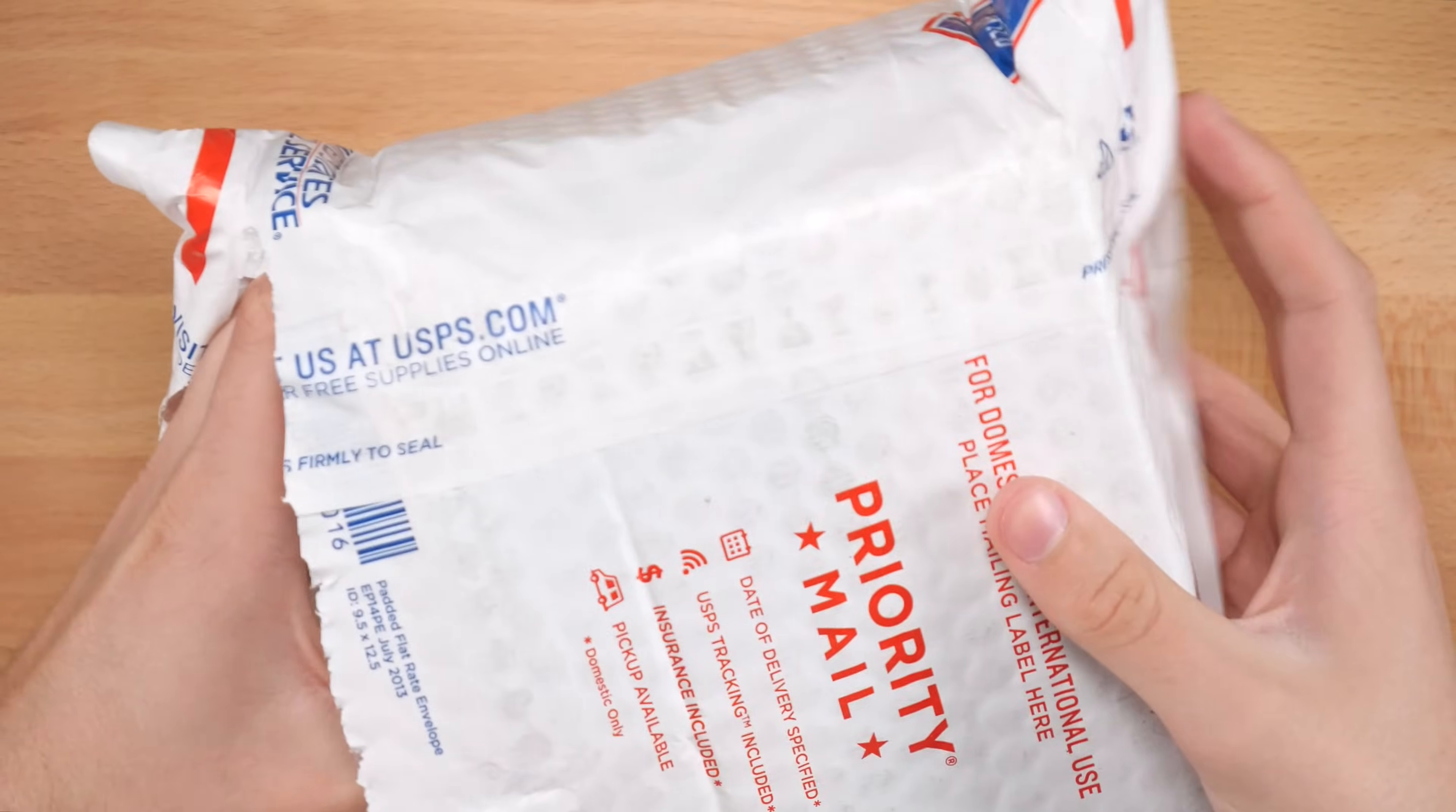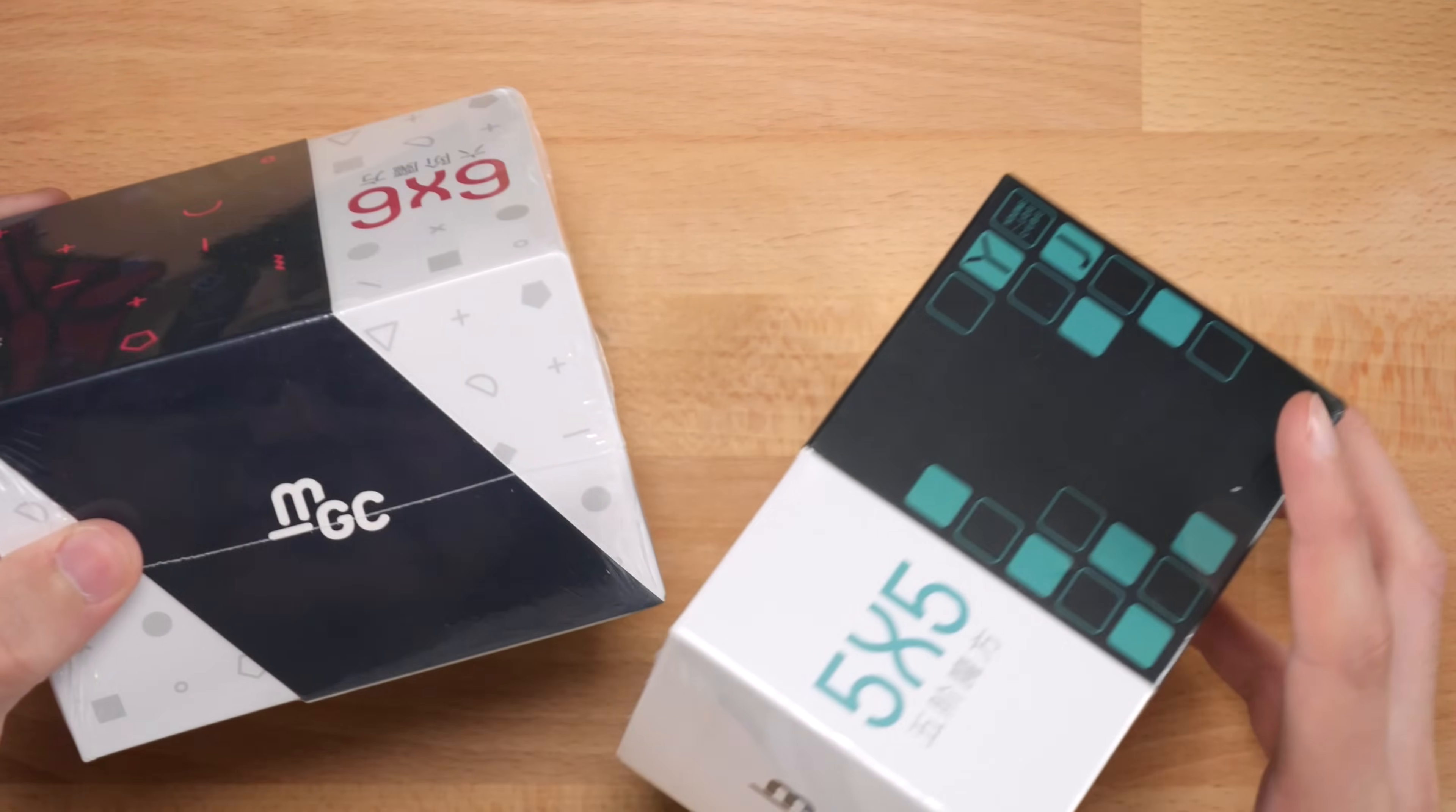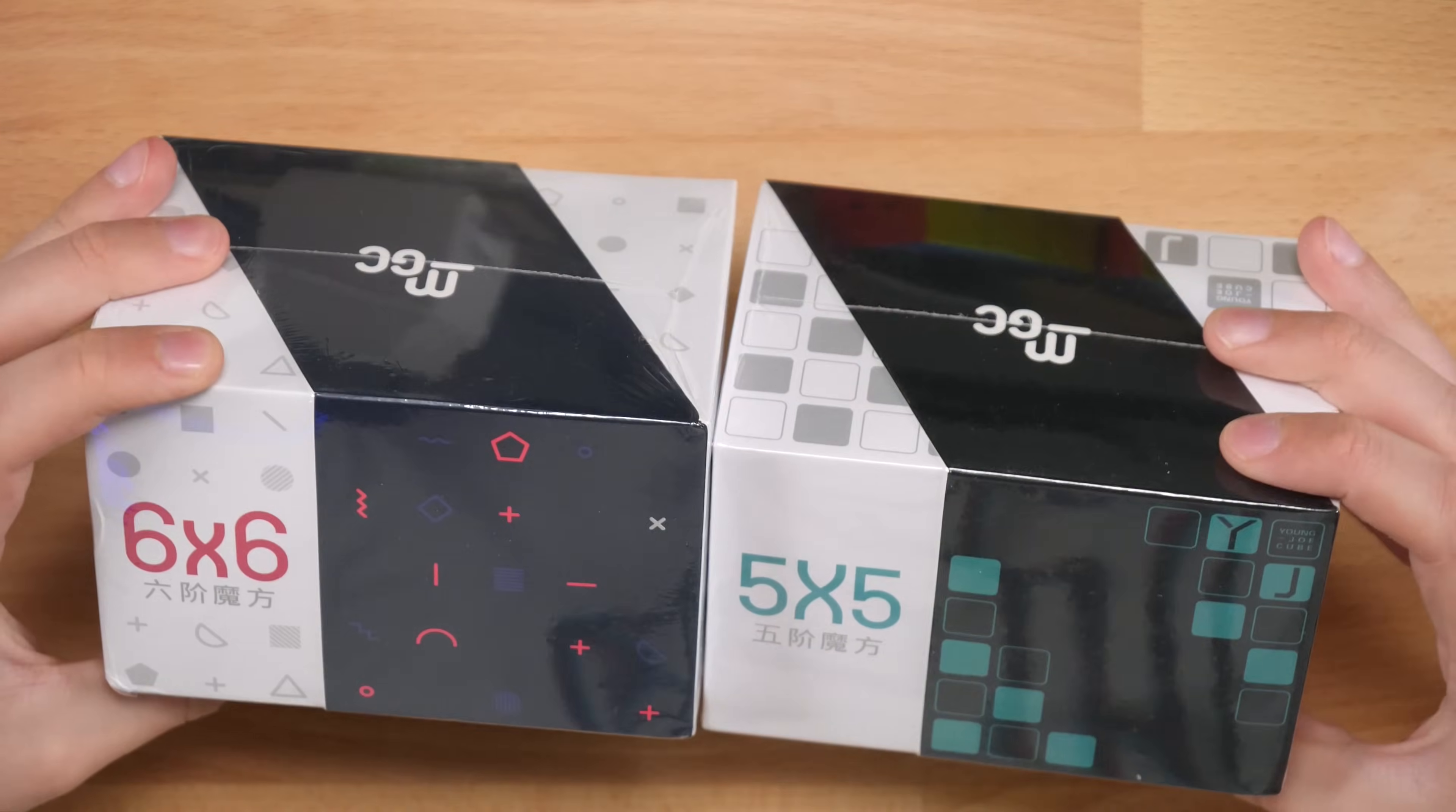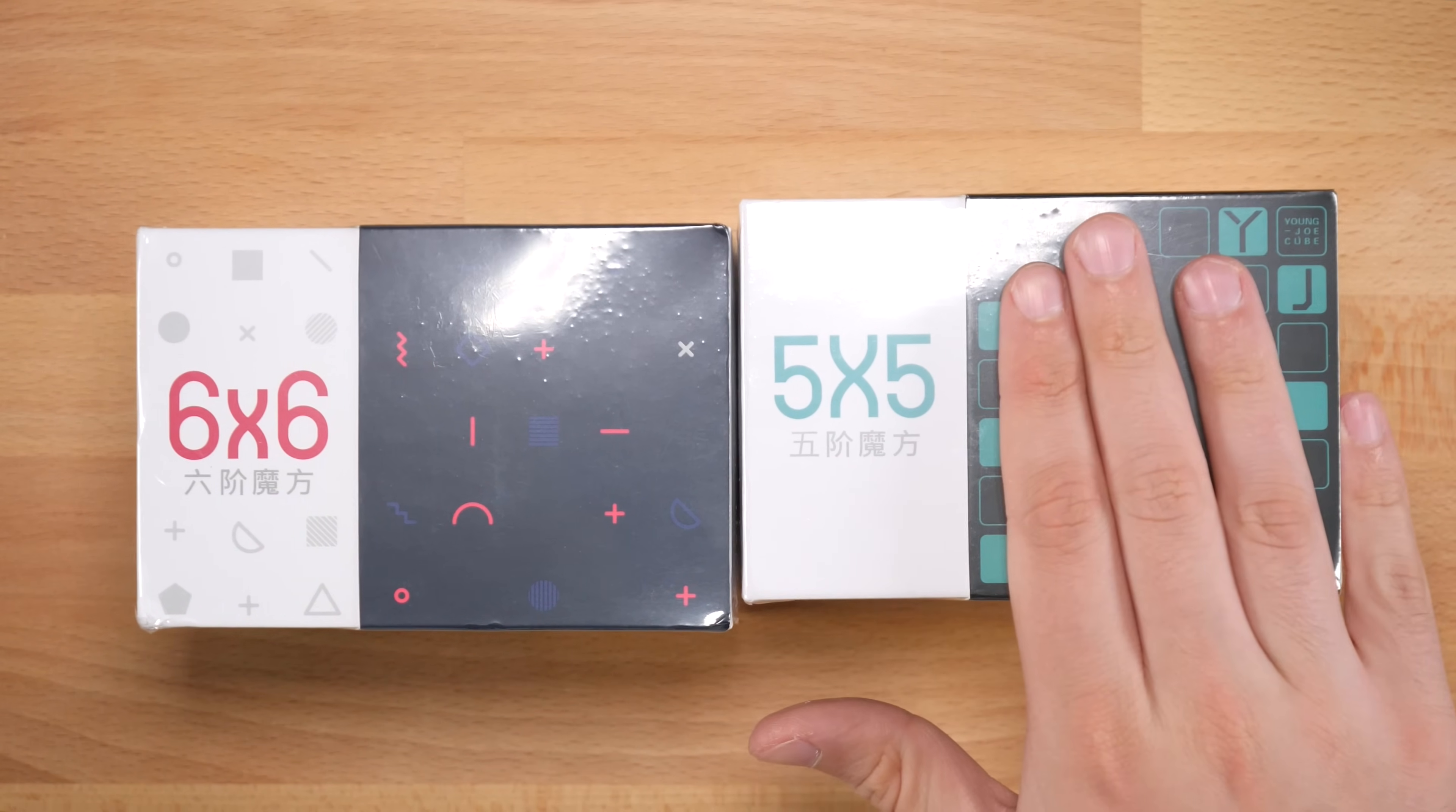All right, looks like we've got a few puzzles in here. Okay, so it looks like we've got some YJ MGC puzzles. Looks like we've got a 5x5 and 6x6. So it looks like YJ is expanding their MGC line to bigger cubes. I don't know if they have a 4x4, not that I'm aware of. So let's go ahead and start with the 5x5.